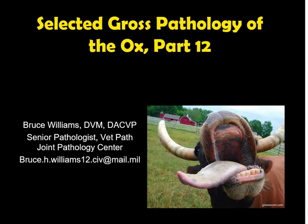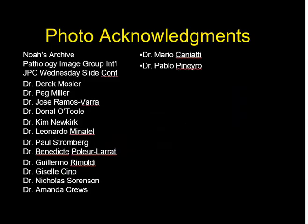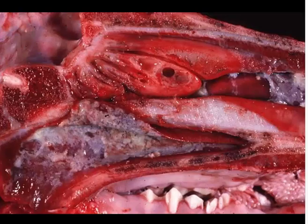Hello, it's Bruce Williams again, and today I would like to present the 12th part of my seemingly inexhaustible lectures on the gross pathology of cattle. Part 12 is going to cover the respiratory system. Before I do that, I want to thank my friends and colleagues who have provided me images over the years through direct contact and through image collections, which allow me to put these lectures together.